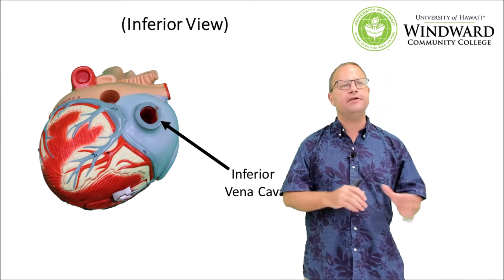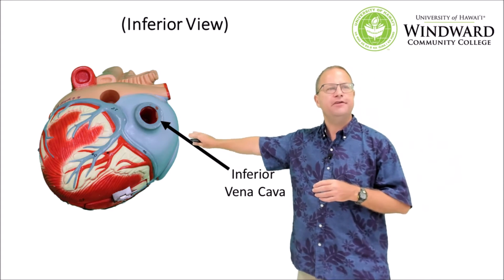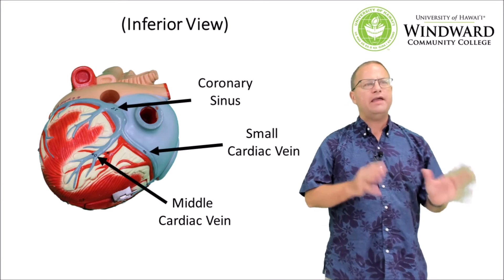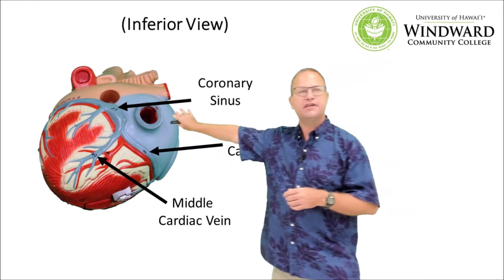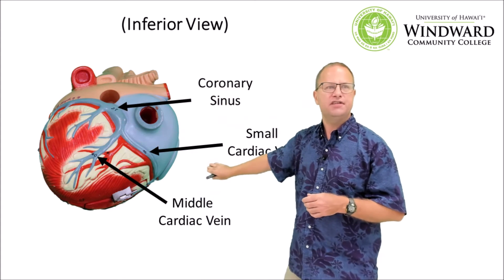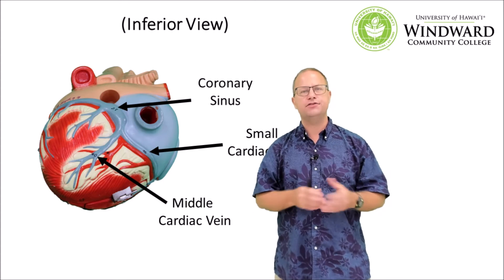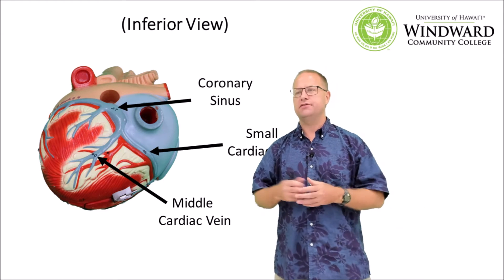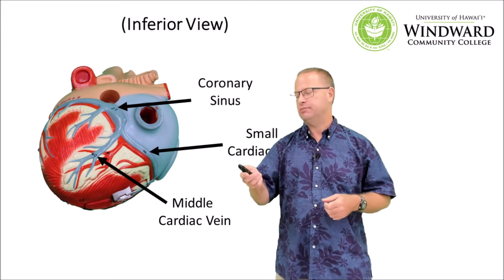Now let's take a look at the inferior side of the heart. Here we can see the inferior vena cava, which brings blood back from the lower extremities. We can also see the coronary sinus, which is an enlargement of the cardiac veins, and our small and middle cardiac veins. These veins are analogous to the coronary arteries but instead of delivering oxygen-rich blood, they drain the heart muscle of oxygen-depleted blood and carry it back toward the lungs for re-oxygenation.